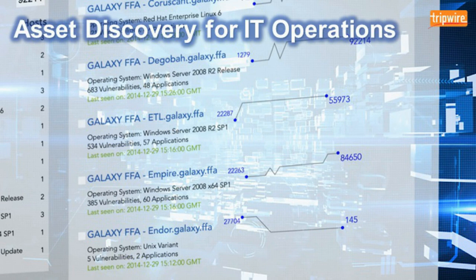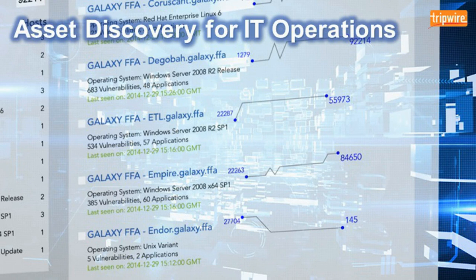For IT operations, it's critical to maintain uninterrupted operations and reduce manual processes wherever possible. The integration between the discovery appliances and Tripwire Enterprise allows all of this important data to flow directly into Tripwire Enterprise, highlighting things as you continue to automate. This drives down costs and allows your staff to focus on the most important applications, assets, and changes that need immediate attention — digging through all the noise and helping to prioritize where your valuable IT operations staff should be focusing their time.